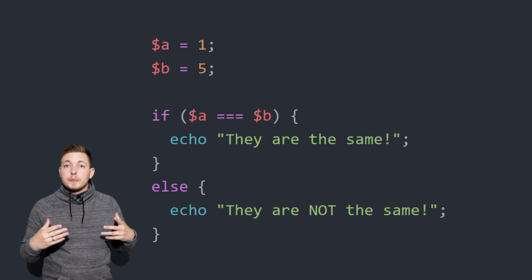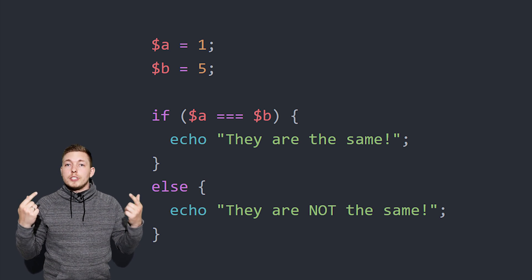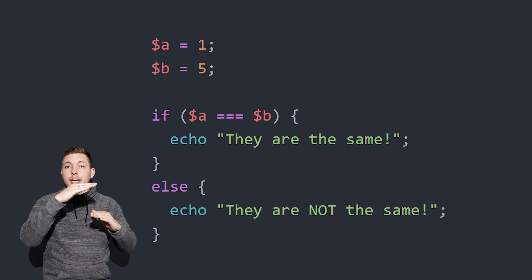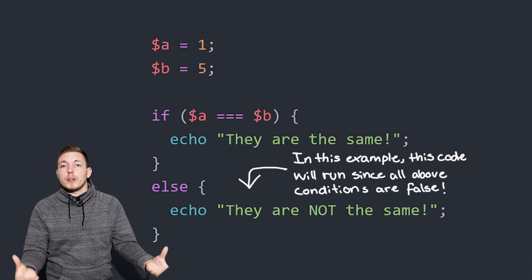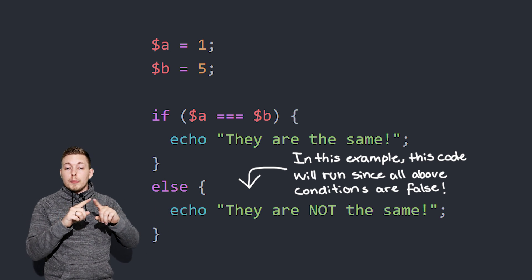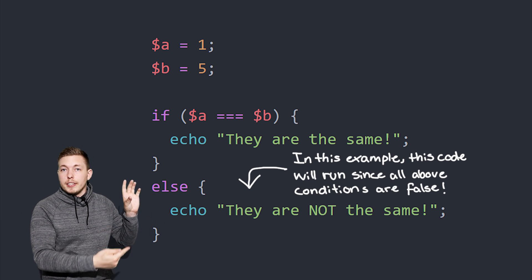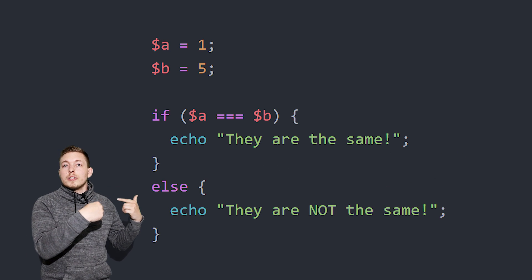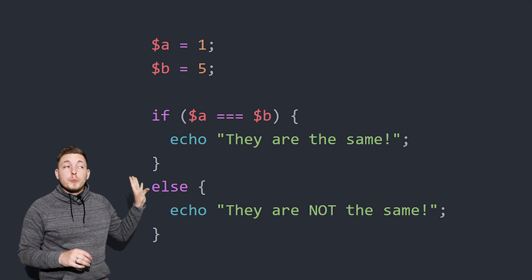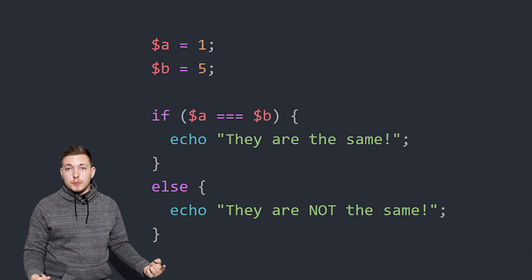An else statement is something we use in order to run a block of code if the above conditions turn out not to be true. So if all of them are not true, then we're just going to run this default block of code. In this case, if the numbers are not the same, I'm going to add an else statement at the end and say 'they are not the same.' So no matter what sort of data we have, one of these conditions will output something inside the browser.